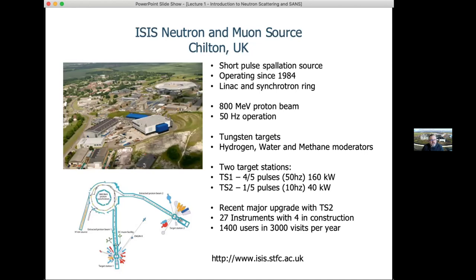An example of a spallation source is ISIS, which is a short-pulse source — the pulse is 100 microseconds long and the source operates at 50 Hz, giving 50 pulses per second. It has a variety of moderators and over 30 instruments. A linear accelerator produces the protons, which are put into a synchrotron to bunch and store them, then extracted and sent to two target stations around which the neutron instruments are placed.